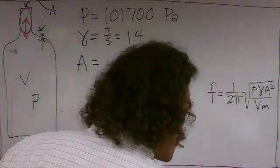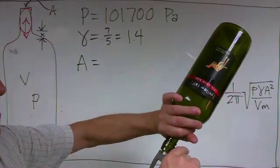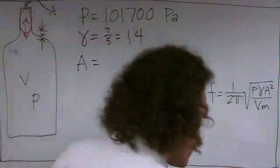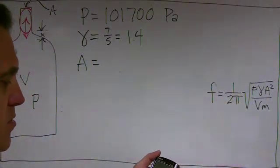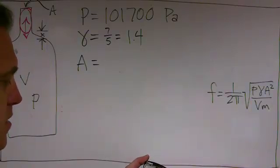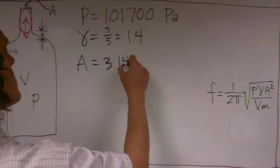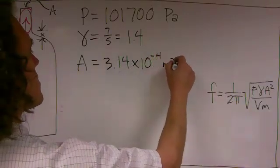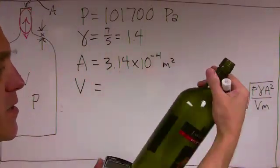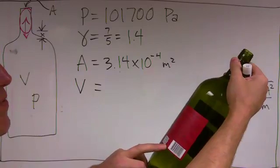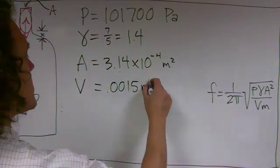The area - the cross-section area of the neck - I measured the diameter at almost exactly 2 centimeters, so the radius is 1 centimeter. πr² is 0.01² meters times π, which is 3.14 × 10⁻⁴ square meters. The volume is the volume of the main part of the bottle. It says on the label this is a 1.5 liter bottle, which is 0.0015 cubic meters in SI units.